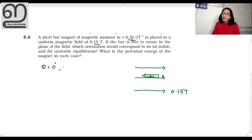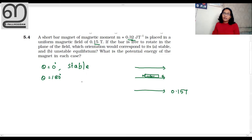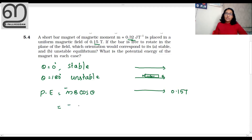If theta is equal to 0 degrees, then the angle between the magnetic moment and the external magnetic field is stable — this is the aligned direction. If we change it to 180 degrees, it is unstable — that is the anti-parallel direction. The potential energy equation is minus mB cosθ. We substitute: minus 0.32 into B of 0.15 into cos 0 — this is the first case.